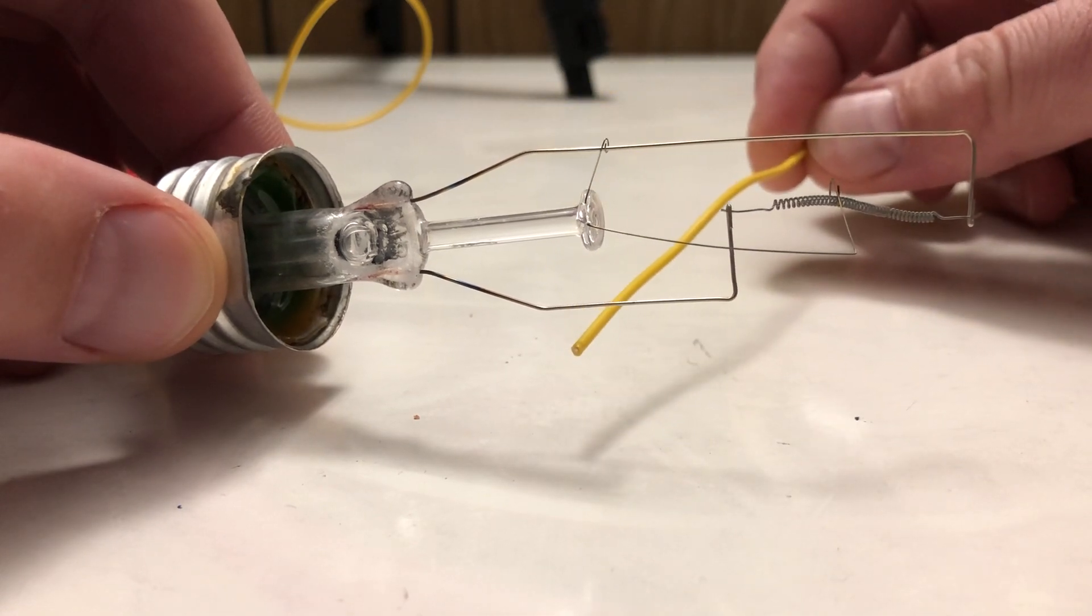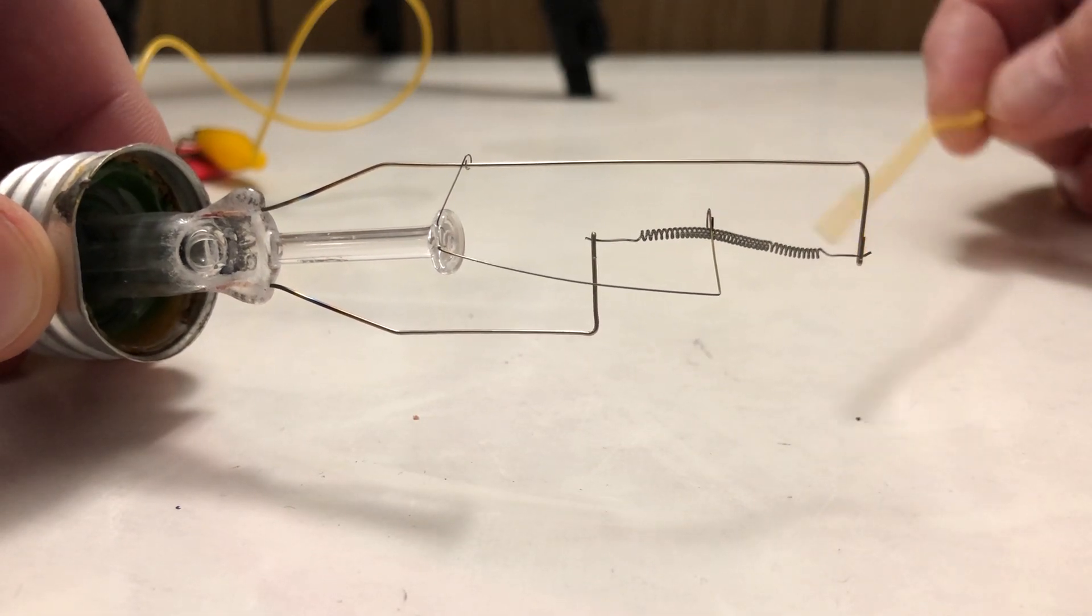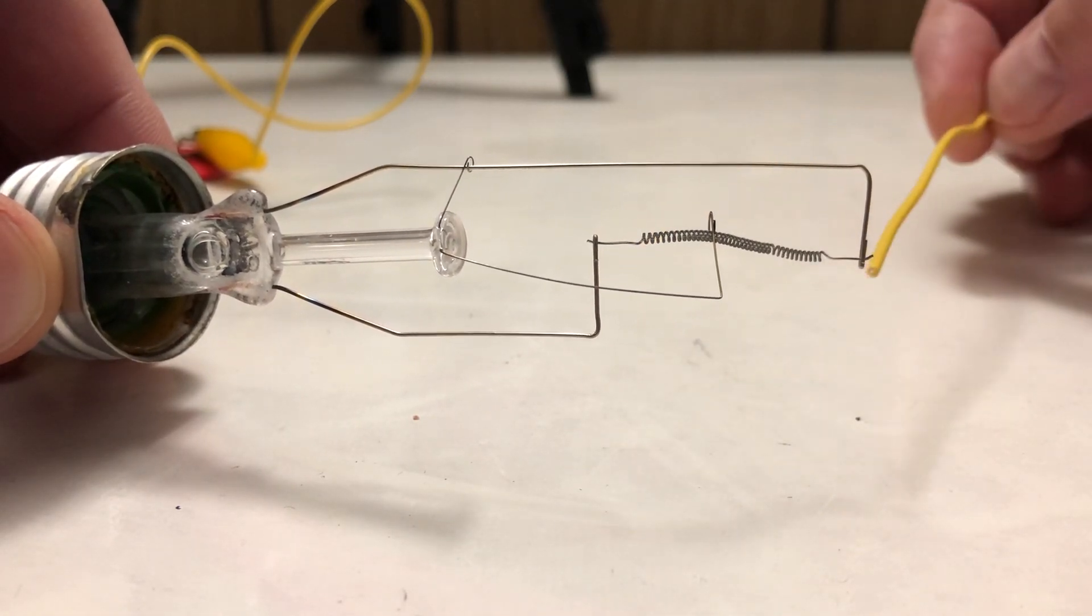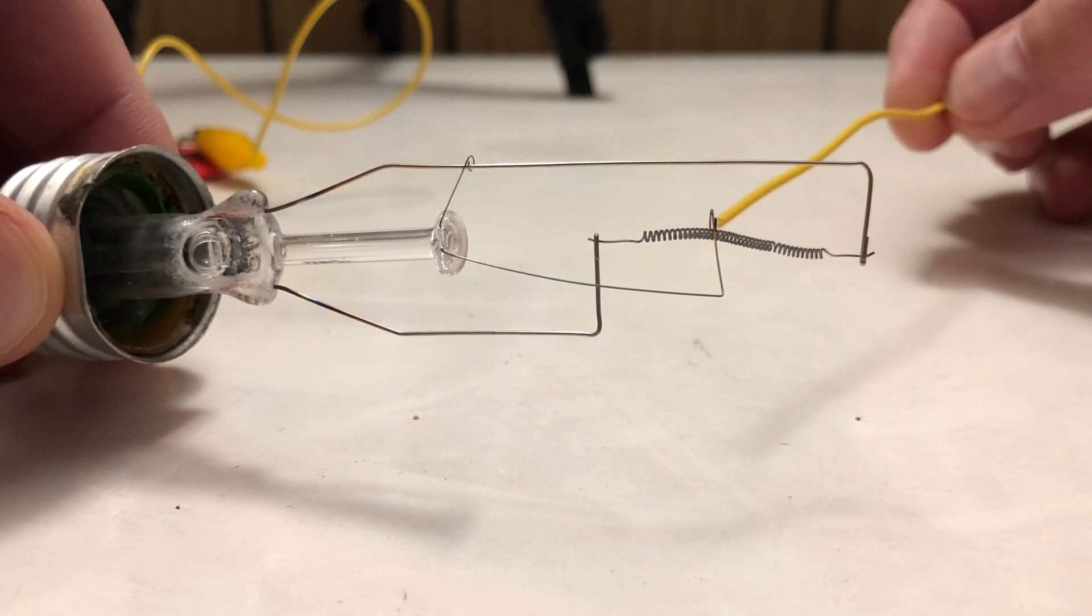Then you can see this coiled part in the middle that connects between the two points of support one and support two. That portion of the bulb is called a filament.